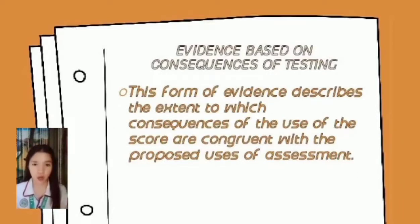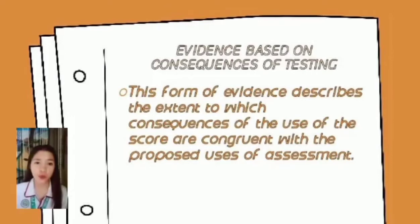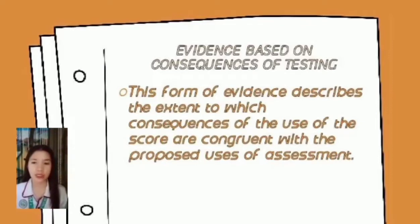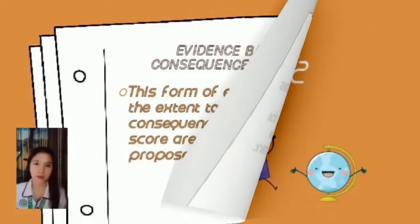The fifth and last validity evidence is evidence based on consequences of testing. It describes the extent to which the consequences of the scores are congruent with the proposed uses of the assessment. Instructors can gather evidence based on consequences of testing by ensuring that scores on their assessment relate to intended future outcomes.